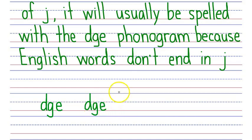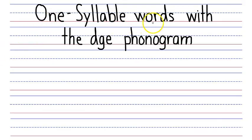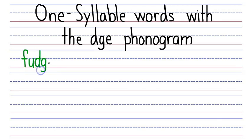Next, let's write six one-syllable words with the DGE phonogram. The first word is fudge. Fudge starts with an F, then a U that makes the short U sound, and then the DGE phonogram — say it fast: fudge. Next word is badge: the B says buh, the A makes a short A sound, then the DGE phonogram.